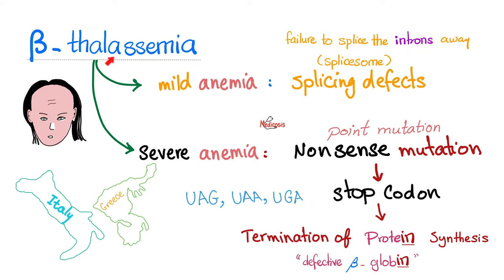Thalasseus means sea, referring to the Mediterranean Sea, because beta thalassemia is relatively more common around the Mediterranean, including my home country, Egypt. Mild beta thalassemia is usually a splicing defect — blame the spliceosome. Severe beta thalassemia, however, is usually a nonsense mutation — a point mutation that creates stop codons such as UAG, UAA, or UGA — leading to cessation of protein synthesis and defective beta globin. If you have a problem in your globin, you will have a problem in your hemoglobin. Watch my previous biochemistry video on cooperativity to learn more about hemoglobin structure and function.